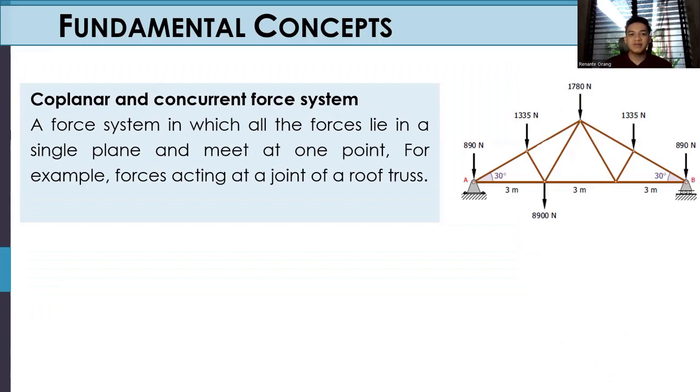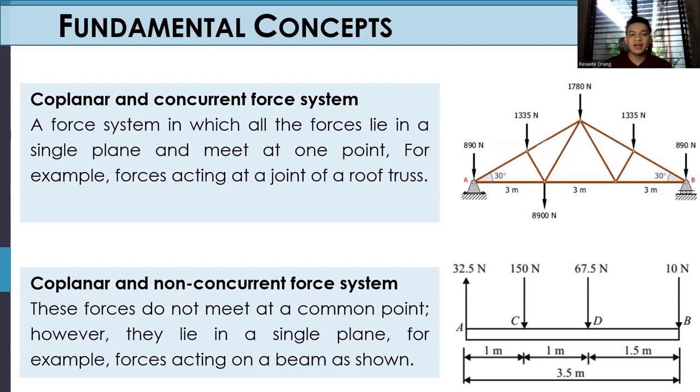Coplanar and concurrent force system: a force system in which all the forces lie in a single plane and meet at one point. For example, forces acting at a joint of a roof truss. Next, we have coplanar and non-concurrent force system. These forces do not meet at a common point. However, they lie in a single plane. For example, forces acting on a beam as shown. These four forces do not intersect with each other.